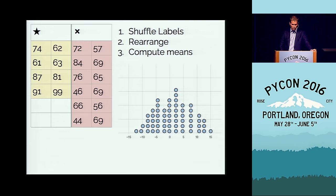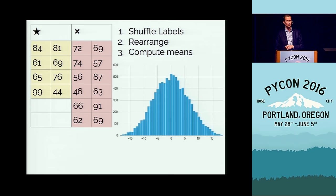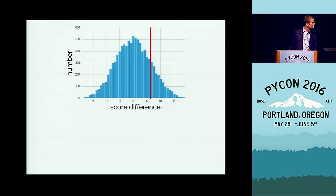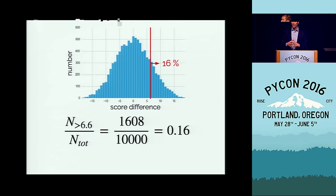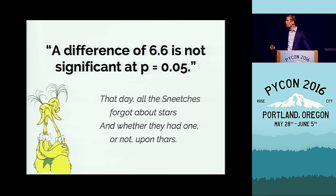We build up an intuitive picture of what we can expect these differences in test scores to be. We draw the line where our measured data lies — around 6 — and compute that about 16% of samples show a score difference greater than 6. Since 0.16 is not less than 0.05, we say this is not significant. So you go in and perform the study, there are hugs all around, all the Sneetches are reunited with their long-lost brothers and sisters, and you've done your good in the world.